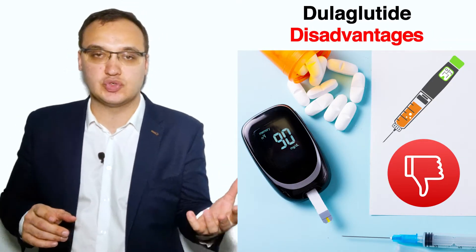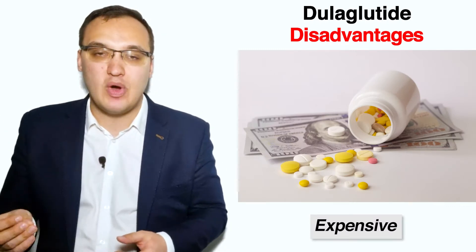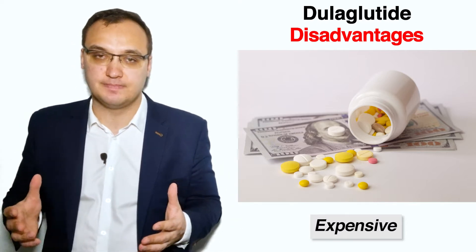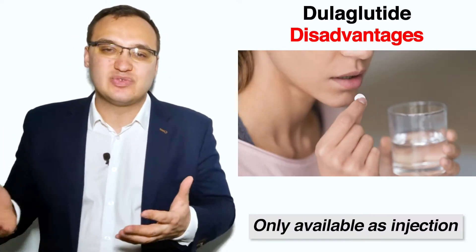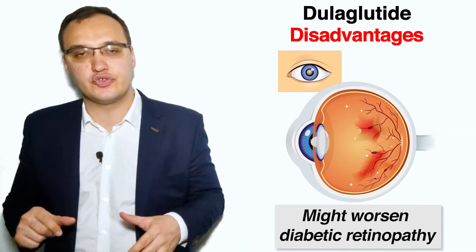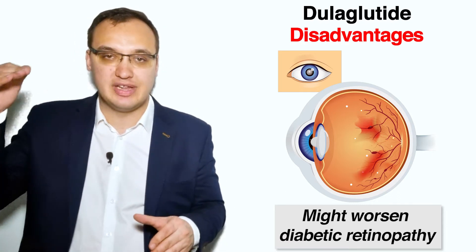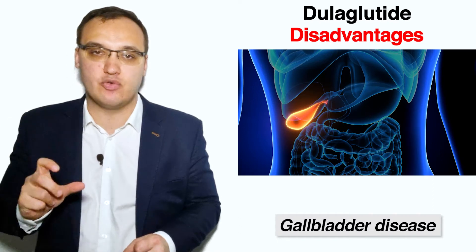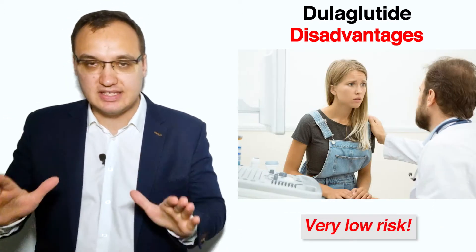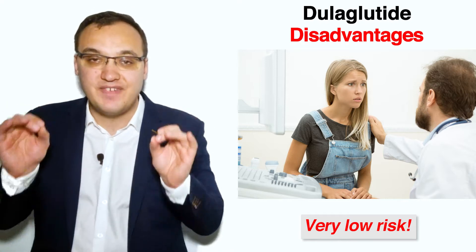However, dulaglutide has some disadvantages. One drawback is that it can be expensive, but hopefully it will become cheaper over time since GLP-1 agonists are proven superior to many other diabetic medications. Another pitfall is that some patients experience gastrointestinal side effects, and some patients prefer oral medicines — but dulaglutide is only available as an injection. Additional concerns from scientific studies show that dulaglutide might worsen diabetic retinopathy, where high blood sugar levels damage the back of the eye, particularly the retina, and it may also play a role in gallbladder disease. Please note, however, that the percentage of patients with these adverse effects is very minimal.